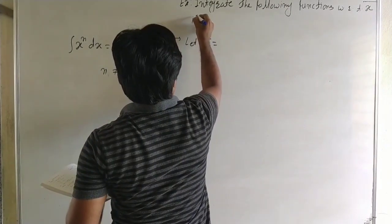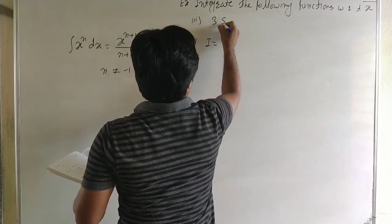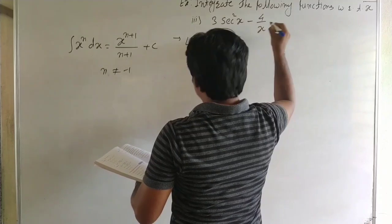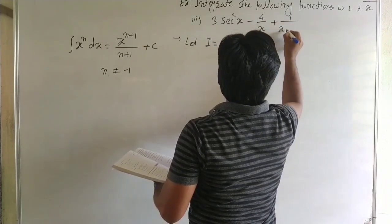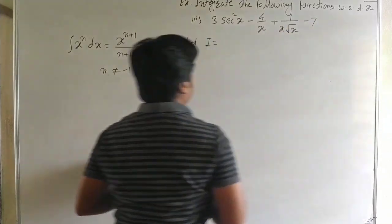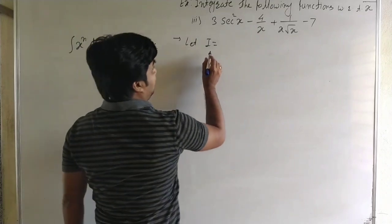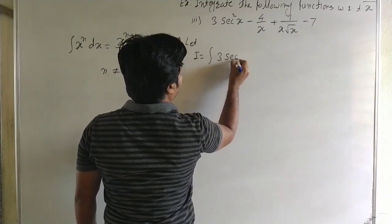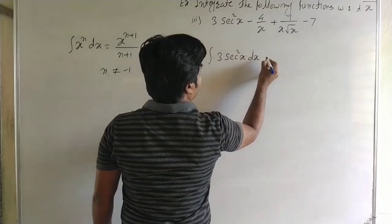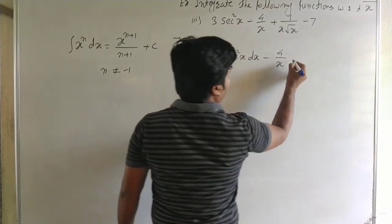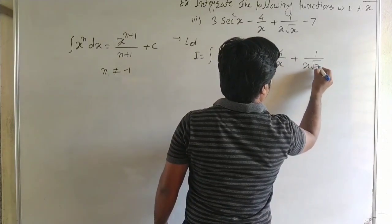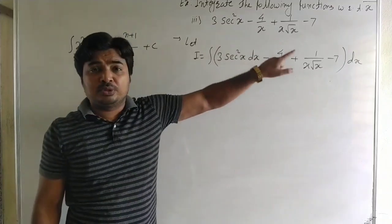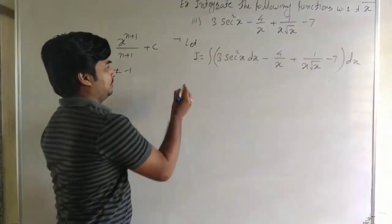Third example: integrate 3sec²x − 4/x + 1/(x·√x) − 7. Let I = integral of [3sec²x − 4/x + 1/(x·√x) − 7] dx. We want to find the integral of this function with respect to x. We separate all the terms.